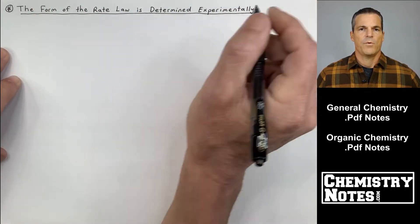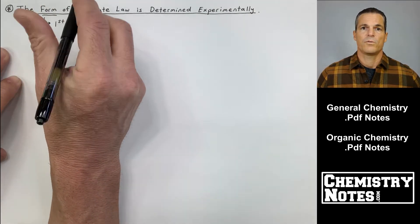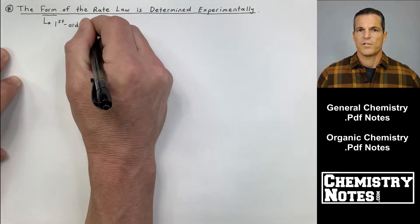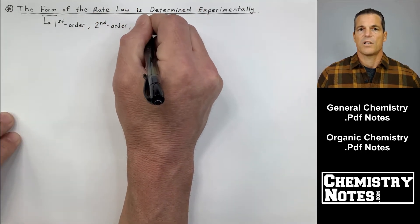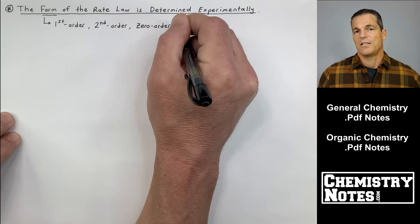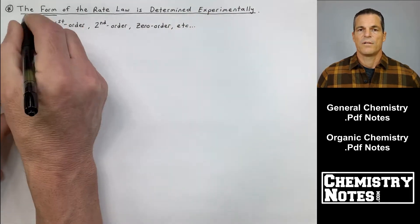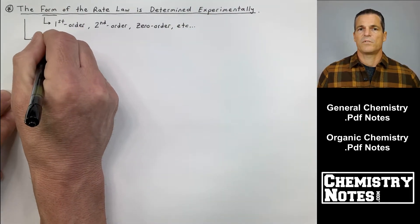In the last video we mentioned that there are two forms or two types of rate laws: differential rate law and integrated rate laws. We'll talk about integrated rate laws in later videos for section 12. So we're continuing our discussion with differential rate laws.